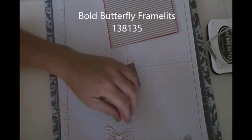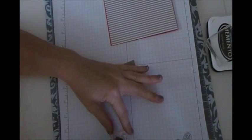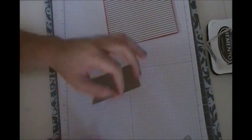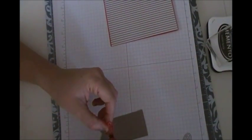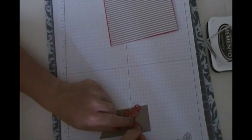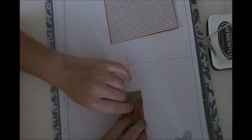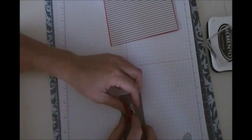That butterfly was stamped using the Watermelon Wonder and the Calypso Coral Inks. And right now I'm just going to make sure that I can get that centered in the middle of that banner. Pull up the wings a little bit so that they're movable.